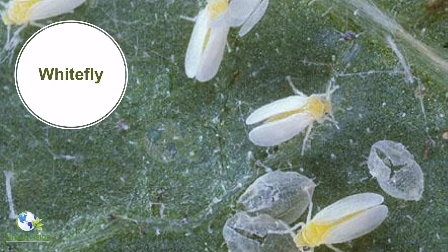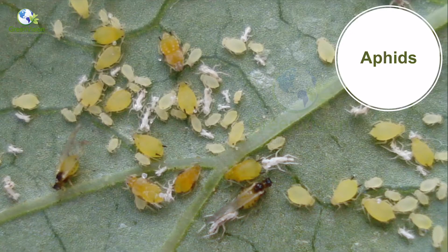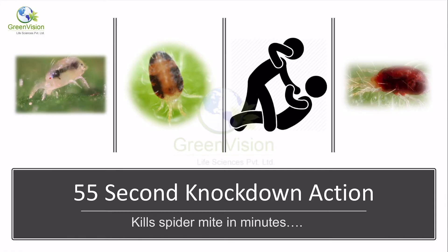Then there are whiteflies — again sucking insects that are difficult to control. The nymphal stage on the leaf is more dangerous and more damaging than the flying adult. MM-Pact immediately controls whiteflies when they come in contact with it. Aphids are also a major polyphagous pest that can infect various types of crops and are also controlled with MM-Pact very effectively.